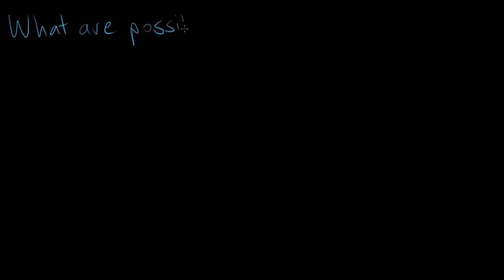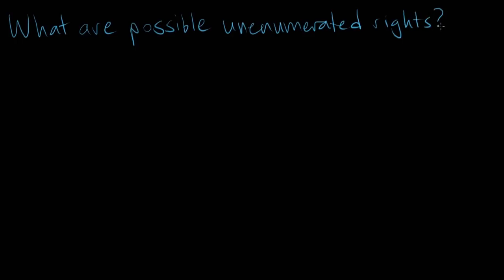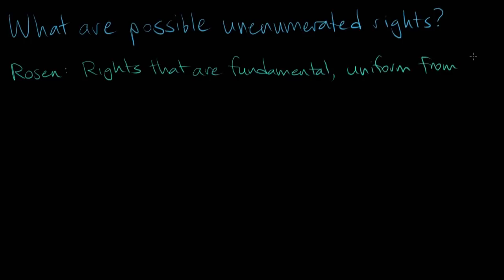Can you give us a few examples of what those unenumerated rights that people have debated have been? The paradigmatic source for identifying what unenumerated rights are protected is a case called Corfield v. Coriel. It was decided in the early 19th century and was cited repeatedly by the people who wrote the Privileges or Immunities Clause of the 14th Amendment. Basically the Privileges or Immunities Clause says that no state shall abridge the privileges or immunities of citizens of the United States. In trying to define them, John Bingham, who wrote the 14th Amendment, said some of the privileges or immunities include the rights written down in the Bill of Rights, but others are not written down. They're rights that are fundamental, uniform from state to state, and have been considered basic rights of Americans from the beginning.